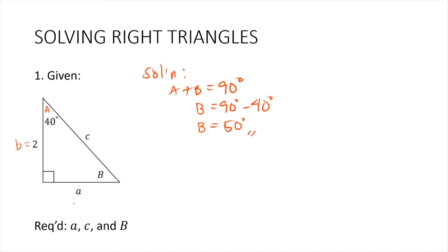Next, let's solve for side A. We should use a trig function that will relate A with the known quantities: angle A which is 40 degrees, and side B which is 2 units. Relative to angle A, side A is opposite and side B is adjacent. So we can use tangent of angle A, which equals the opposite side A divided by the adjacent side B, equal to 2 units.